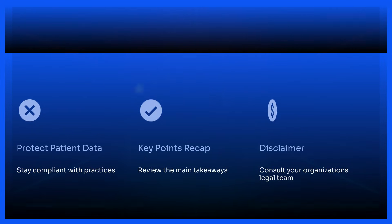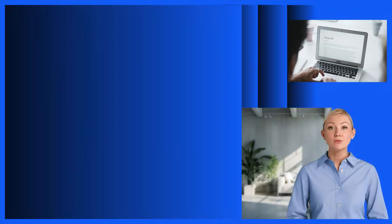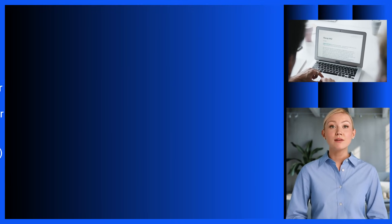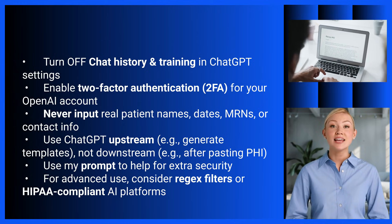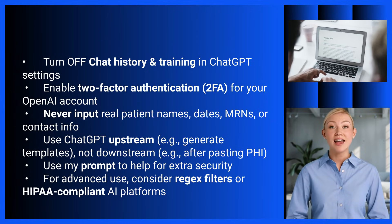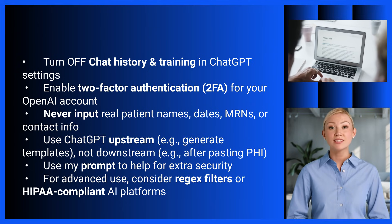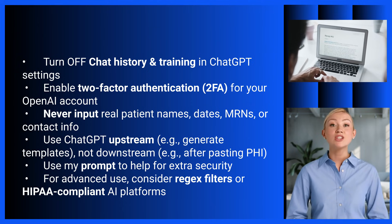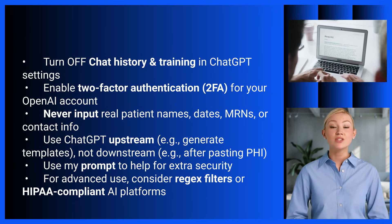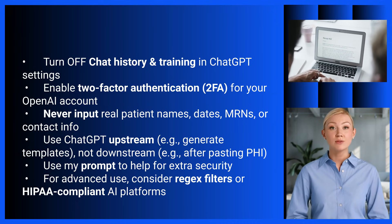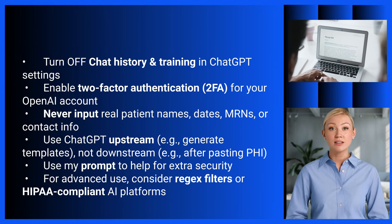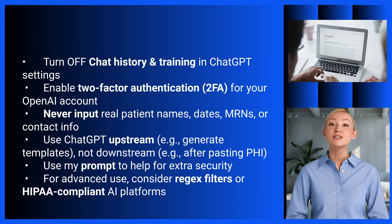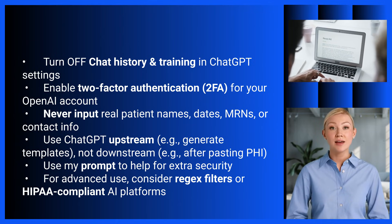Let's recap the key points. We've explored AI's role in healthcare, HIPAA requirements, and privacy measures. Turn off chat history and training in ChatGPT settings. Enable two-factor authentication for your OpenAI account. Never input real patient names, dates, MRNs, or contact info. Use ChatGPT upstream — for example, to generate templates — not downstream after pasting PHI. Use the de-identification prompt for extra security, but don't rely on it fully. For advanced use, consider regex filters or HIPAA-compliant AI platforms.